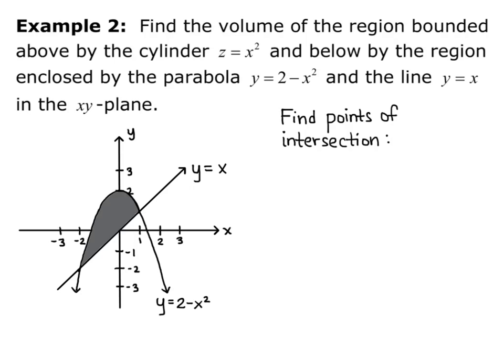So to find the points of intersection, what I'm going to do is set the two equations equal. So I have y equals x and y equals 2 minus x squared. So if I set those equal, I'm going to get x equals 2 minus x squared.